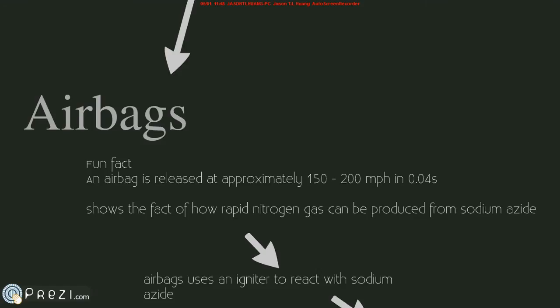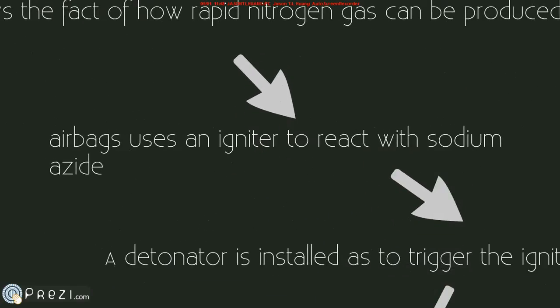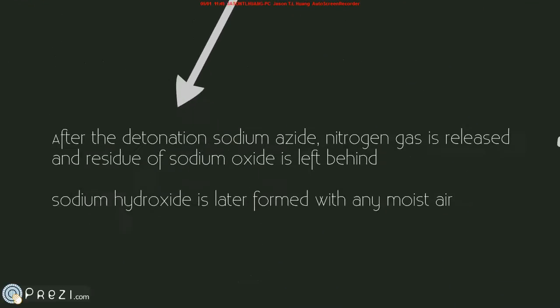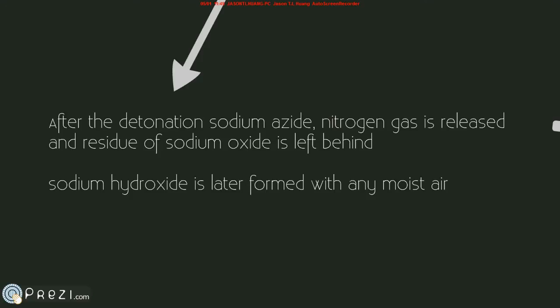I will now move on to sodium azide's uses in airbags. Here's a fact on airbags: an airbag can be released at approximately 150 to 200 miles per hour in a time interval of only 0.04 seconds. This shows how rapidly nitrogen gas can be produced and at what speed an airbag can hit you in an automobile accident. An automobile contains an igniter which is used to react with sodium azide, and a detonator is installed inside the automobile to trigger the igniter on impact. After the release of nitrogen gas, the residue of sodium oxide will remain for a while before forming sodium hydroxide with the moist air in its vicinity.